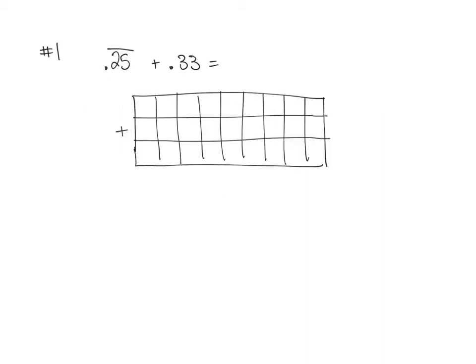Question 1 gives you two decimals to add together and we need to put them into the charts. For 0.25 repeating, we're putting our decimals at the beginning in their boxes — they have them drawn in — so we're just going back and forth: 2, 5, 2, 5, and so on. For 0.33, it's not repeating, so we put 33 and then everything else is just a 0.